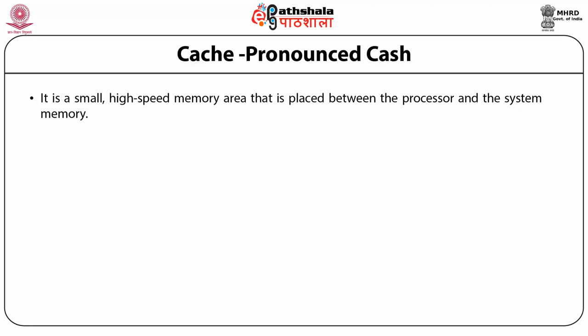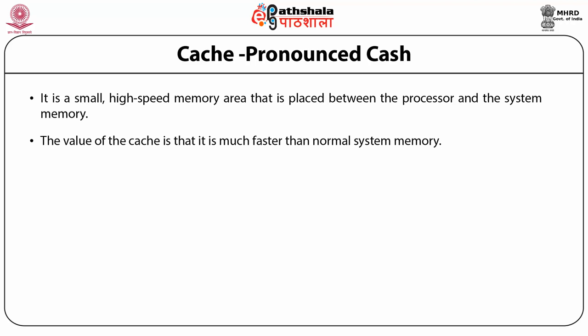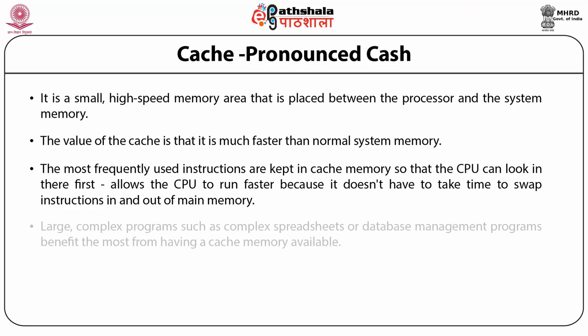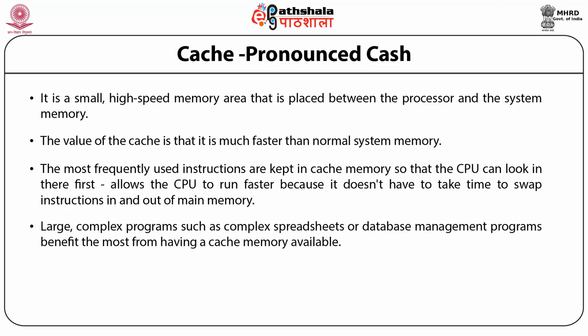Cache is a small, high-speed memory area placed between the processor and system memory. It is much faster than normal system memory. The most frequently used instructions are kept in cache so the CPU can look there first, allowing it to run faster without swapping instructions in and out of main memory. Large complex programs such as spreadsheets and databases benefit most from cache memory. Pentium-class processors typically come with at least 512 KB of cache memory.